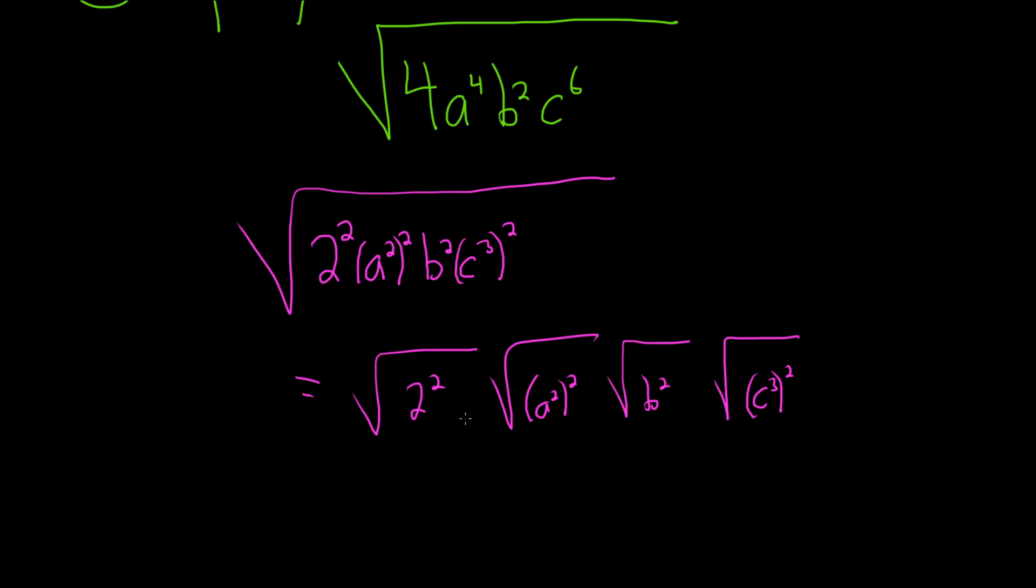The square root gets rid of the 2, just like the formula said. So this will be 2 a squared b c cubed.